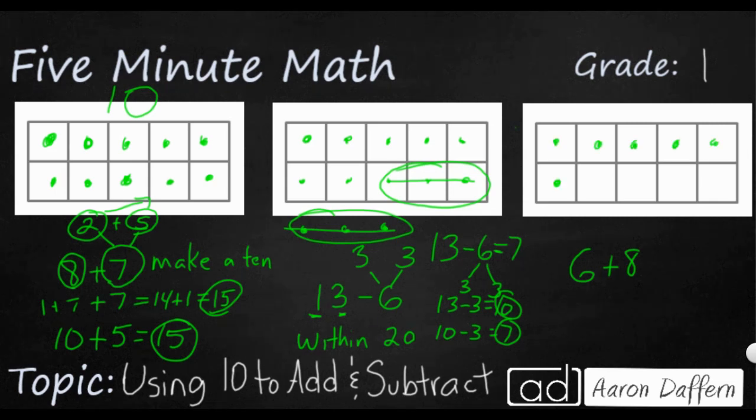So I've got my first addend, 6. Put it here in my 10 frame, and I can see there are 4 left over. So I'm going to take my 8 and I'm going to break it up into 4 to make my 10. So 6 plus 4 equals 10. And now I need to see, well, out of 8, 8 is really 4 plus 4. So 10 plus 4 is going to make 14, and hopefully that is the answer you got.